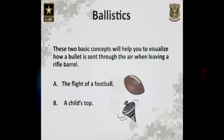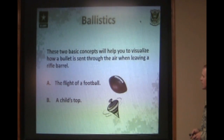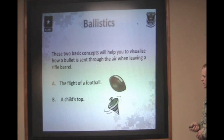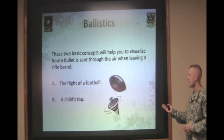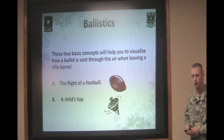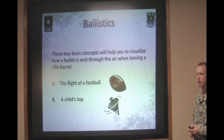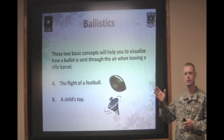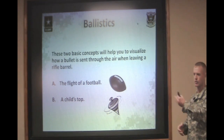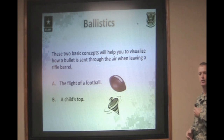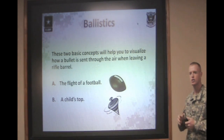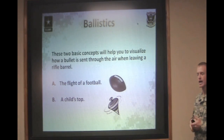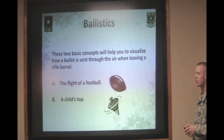We have two basic concepts that help you visualize how a bullet flies through the air when leaving the rifle barrel: the flight of a football and a child's top. As you know, if you're going to throw a football on a very short pass, you can pretty much throw it directly to the person for over a short distance. If you have to throw it farther downrange, you have to increase the angle of departure, lofting the football higher in the air, allowing it to fly farther before it falls.